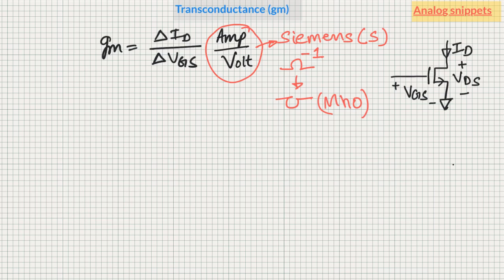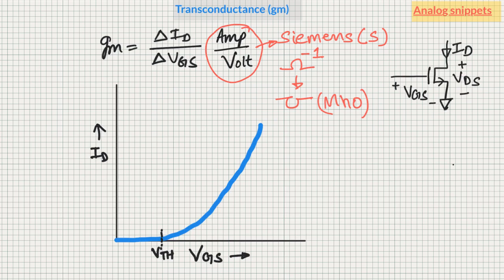If we plot ID versus VGS graph, we notice that it is a very nonlinear curve. In the beginning there is hardly any change in ID as we change VGS, while at higher VGS, ID changes rapidly. So from this equation, gm will be very small in the beginning, and as we move right, gm will increase something like this red curve. Notice that here I am not implying any particular graph, I am just saying that gm is increasing as we move from left to right.